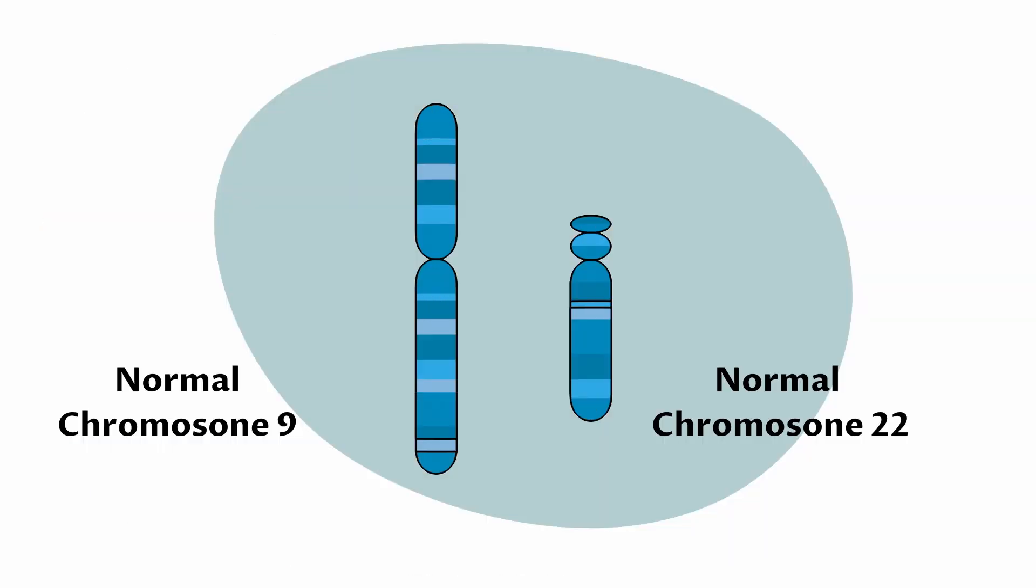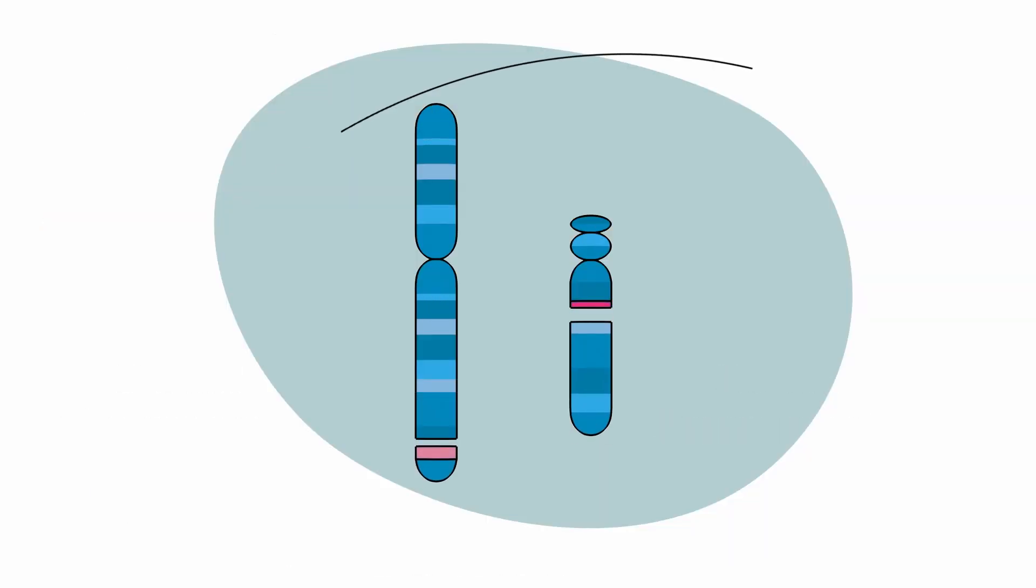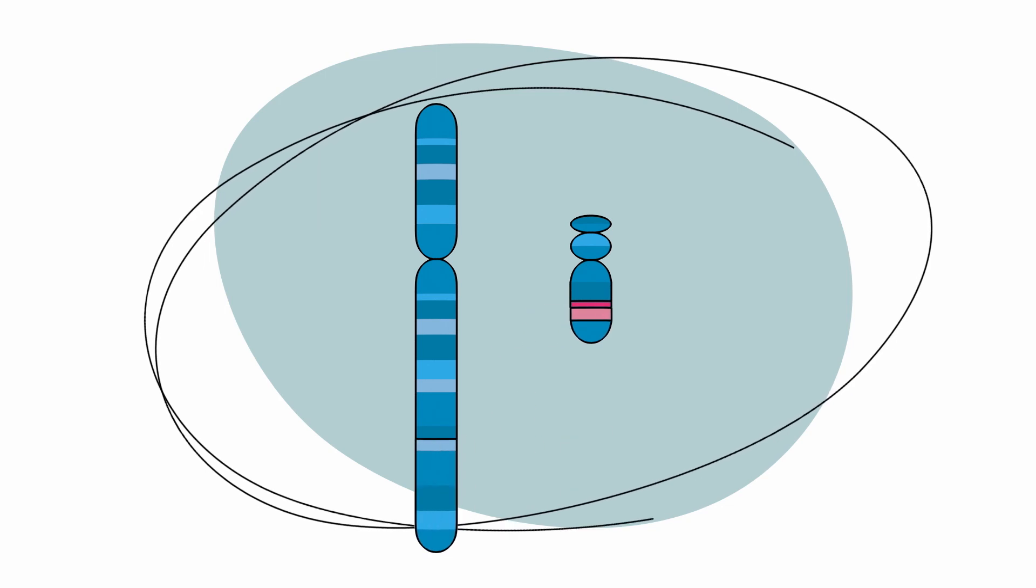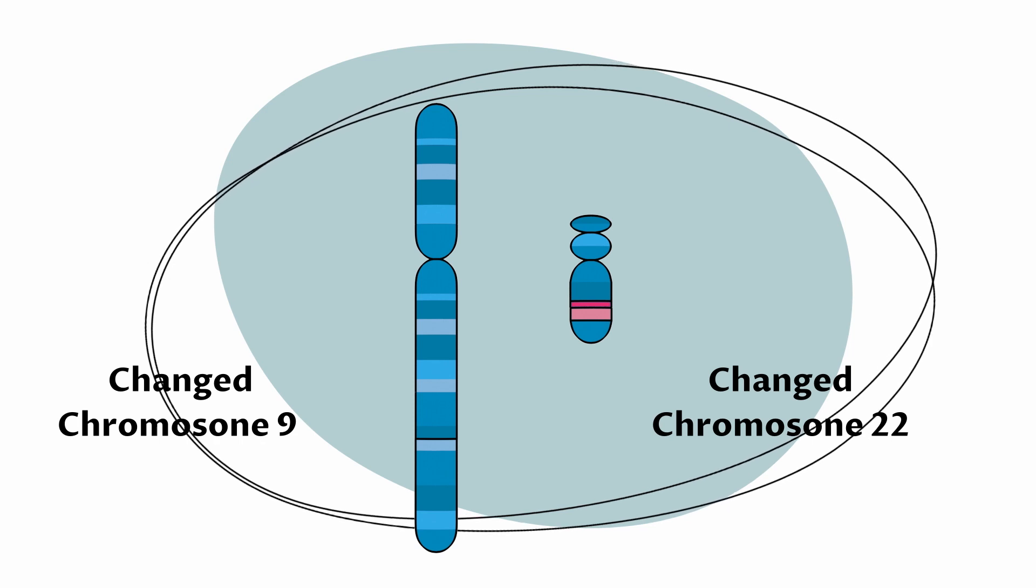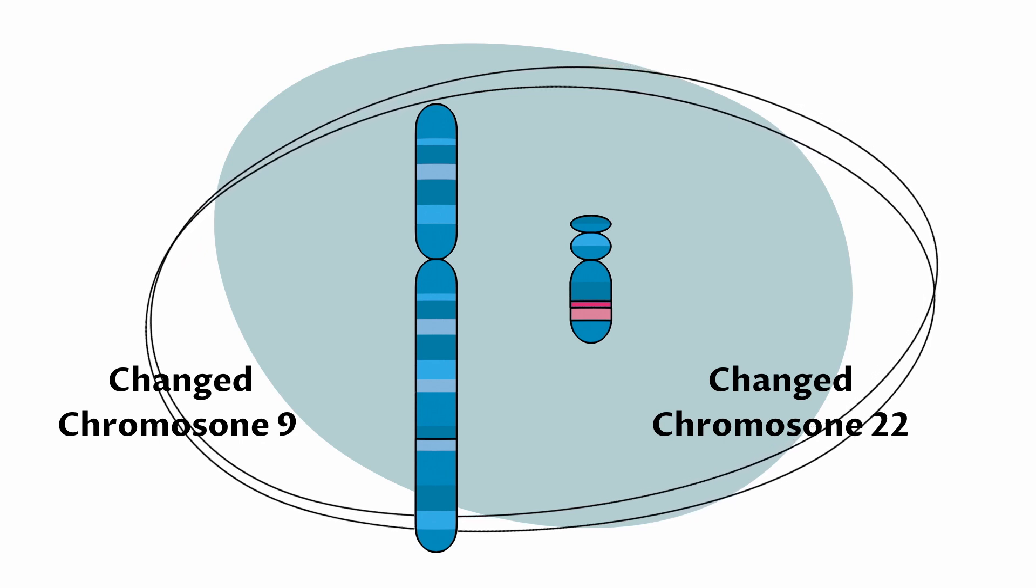In CML, parts of chromosomes 9 and 22 swap sections with each other, creating an extra short chromosome 22 and an extra long chromosome 9.